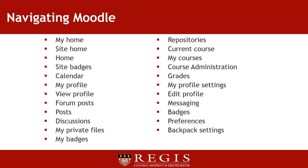Home: Select this link to expand the options under it. Site Badges: This section identifies if there are any badges in the course to be earned and if you have earned them yet. Calendar: This link shows you a calendar that highlights any due dates that are within Moodle in relation to any course you are currently enrolled in. If you select a particular item on the calendar, it will bring you into that item within the course in which the assignment is due.